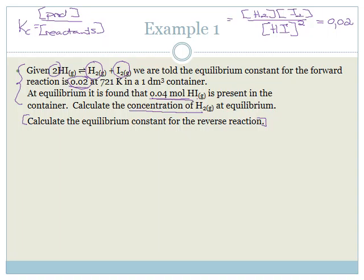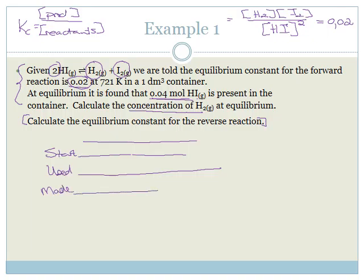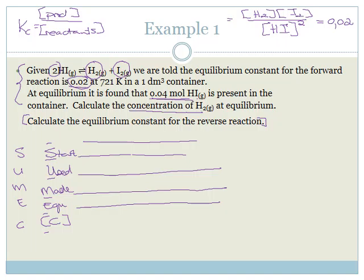There are lots of different ways to label this table. I use SUMEC, which stands for Start, Used, Made, Equilibrium, and Concentration — in square brackets. So if you look at the first letters you get SUMEC, which is why I call it the SUMEC table. Some people use SHREC, which stands for Start, Change, Equilibrium, Concentration. It doesn't matter — as long as you have a table you understand and you're using it to track what happens to reactants and products until they reach the final equilibrium state.